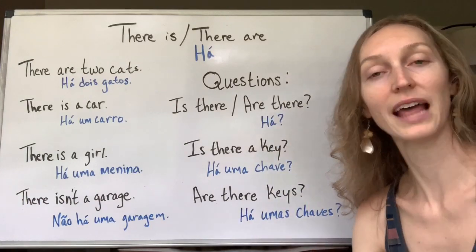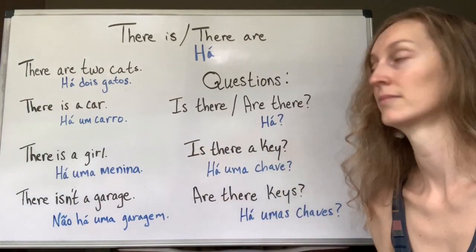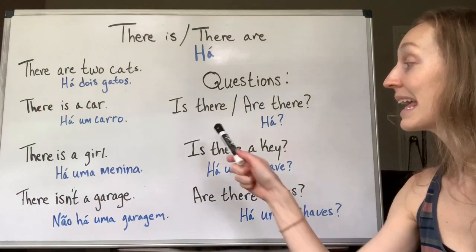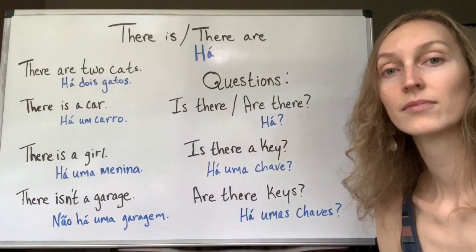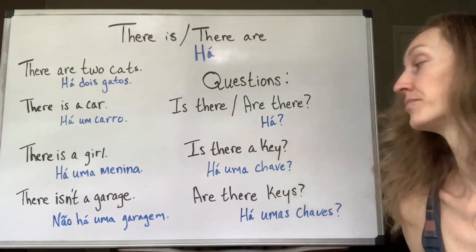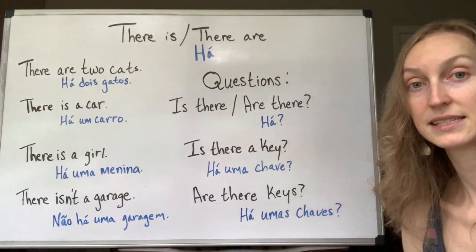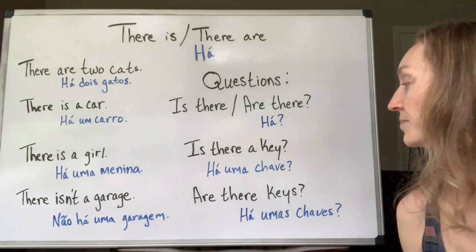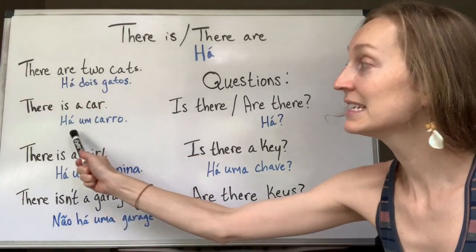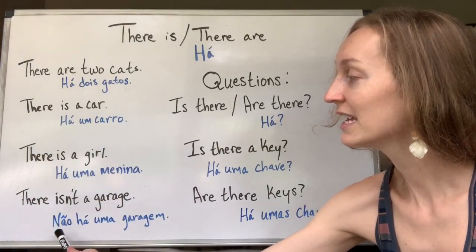Questions — como você iria perguntar usando 'there'? O 'is' vai na frente do 'there', e o 'are' vai na frente do 'there'. Is there? Are there? Is there a key? — há uma chave? E quando é plural: are there keys? Você pode perguntar: are there two cats? Is there a car? Is there a girl? Is there a garage?